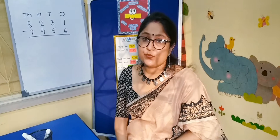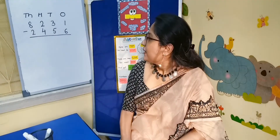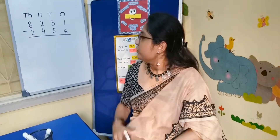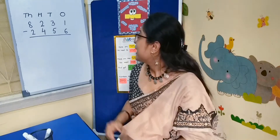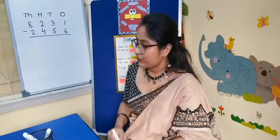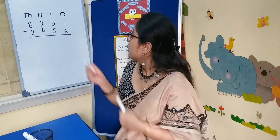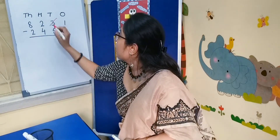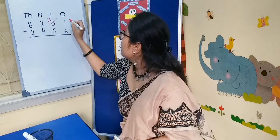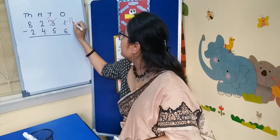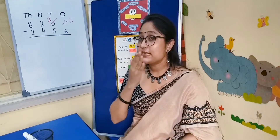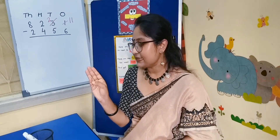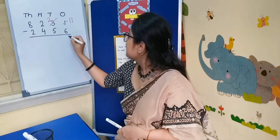Now we will do 4 digit borrowing subtraction. Here in the ones column, we can see there is less on the top and more on the floor. So we have to go to the next door — that means the tens column. We will borrow 1 ten and it will become 2 there, and the ones become 11. Now from 6 we count to 11: 6, 7, 8, 9, 10, 11 — that is 5.